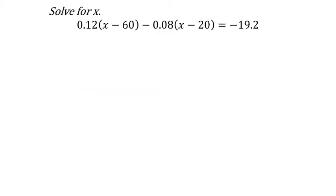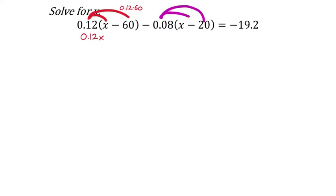We did one like this already today, but let's do another one. We need to distribute 0.12, and also negative 0.08 will be distributed as well. Starting with negative 0.12: 0.12 times x is just 0.12x. Then 0.12 times negative 60 — I'll do this in the calculator. I get negative 7.2, but we'd write that as minus 7.2 in the problem.